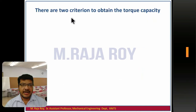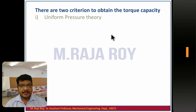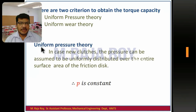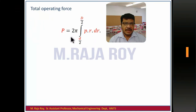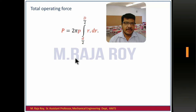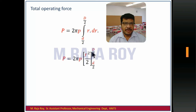Now we will see two different criteria to find the operating force and torque transmitting capacity. The first is uniform pressure theory and the second is uniform wear theory. In uniform pressure theory we assume pressure is constant — this applies to new clutches where the intensity of pressure remains constant. Taking the total operating force equation and taking p out of the integration as a constant, then integrating r from d/2 to D/2 gives r²/2. After simplification you get the equation for operating force P.